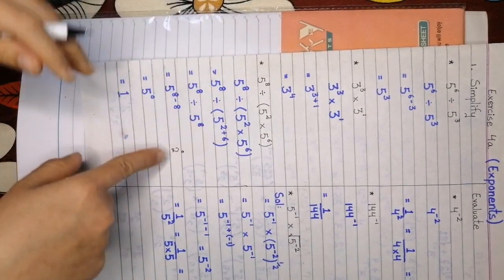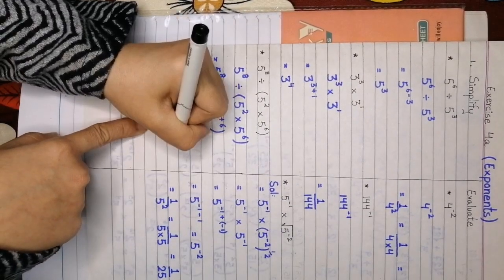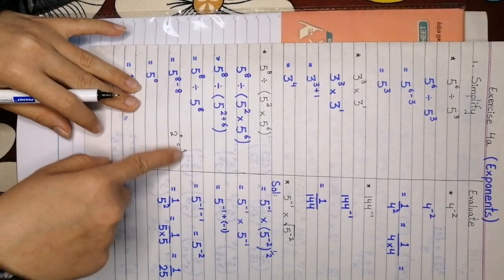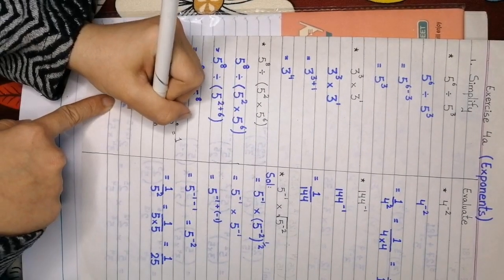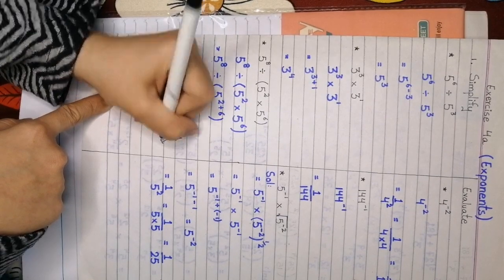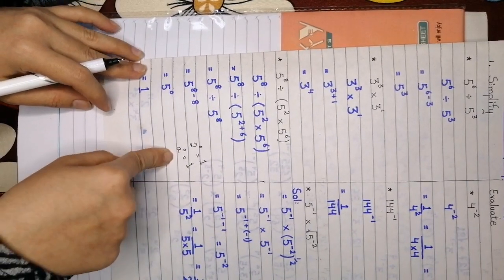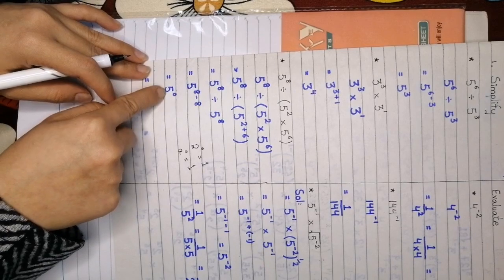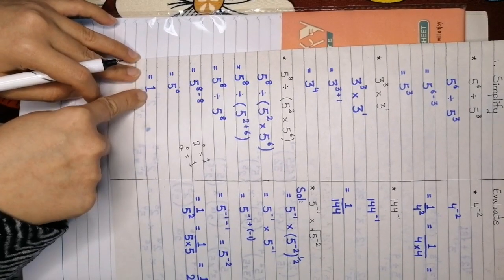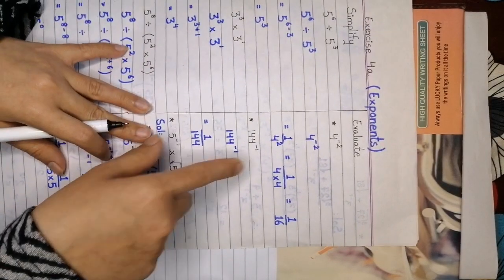If you remember, we have learned the zero exponent before. Anything raised to the power 0 with any base is equal to 1. This is the zero exponent rule — if we have a raised to power 0, we get 1. So according to this, 5 raised to power 0 is equal to 1. Our answer is 1.